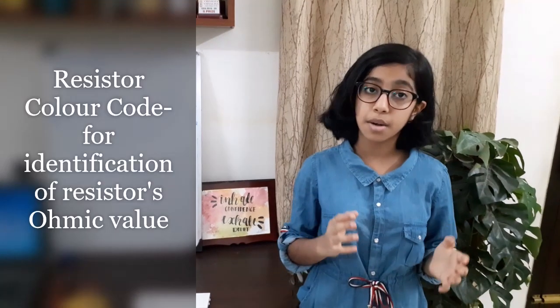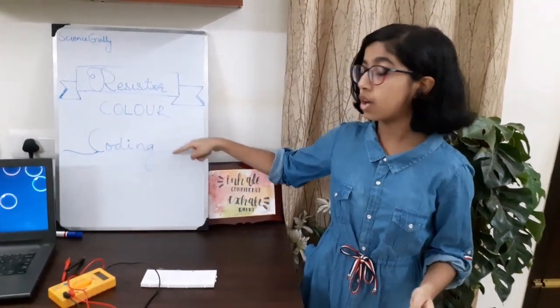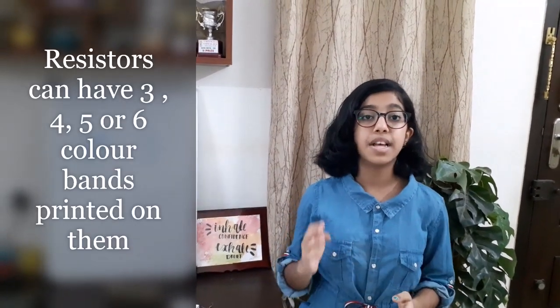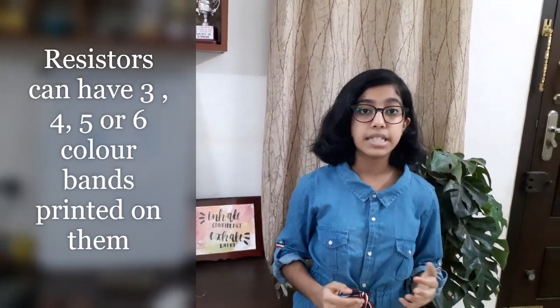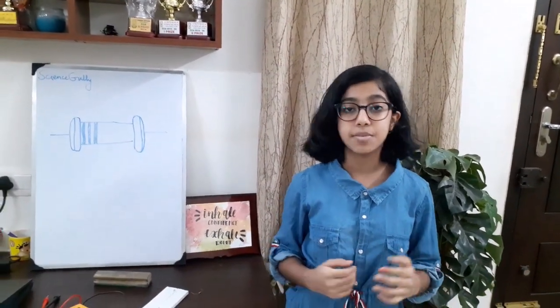These colored bands produce a system of identification generally known as resistor color code. You might have observed some resistors have 3 bands, some have 4 bands or 5 bands, and some have 6 bands. The colored bands are used to denote resistance, tolerance, and temperature coefficient.